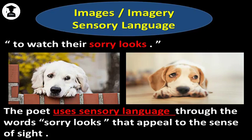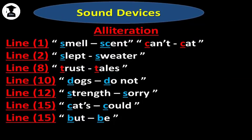Now I'm going to illustrate to you the different sound devices used by Linda Hogan in this poem. First, alliteration. Do you remember what is alliteration? Alliteration is the repetition of the first consonant sound. In line one we have the words smell and scent. Can't, cat. In line two we have the words slept, sweater. In line eight, trust, tales. In line ten, dogs, do not. In line twelve, strength, sorry. In line fifteen, cats, could. And in line fifteen also, but, be.